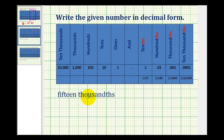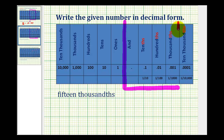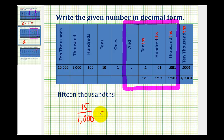Here we have 15 thousandths. Looking at the place value chart, notice the thousandths occurs three digits to the right of the decimal. So our number will have to contain three digits to the right of the decimal, dealing with this part of the place value chart. It may be helpful to write this as a fraction first. Fifteen thousandths would be 15 with the denominator of 1,000, which in decimal form must have three digits to the right of the decimal. So it would be 0.015.